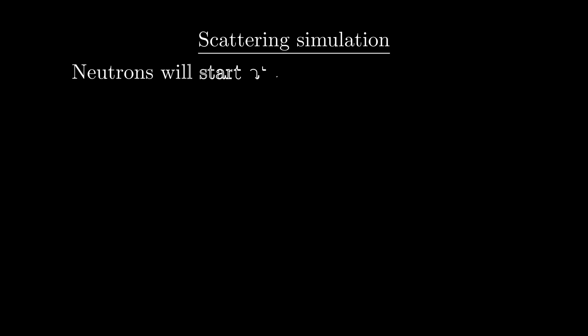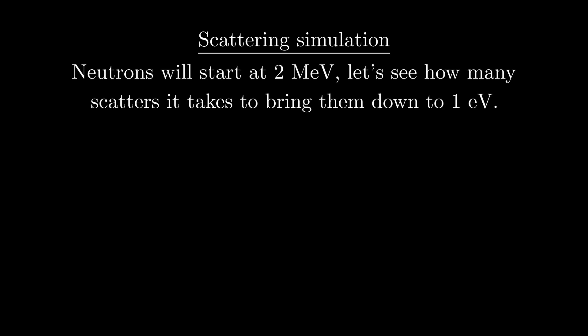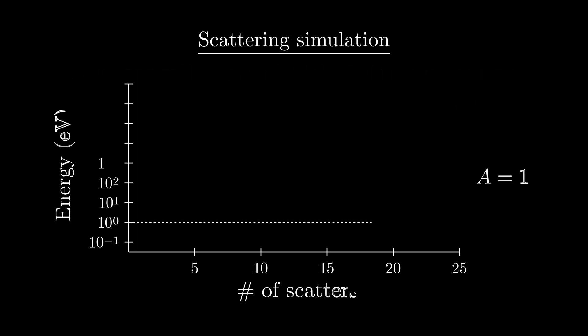We'll do a little Monte Carlo simulation here, where we simulate a number of neutrons which all start at 2 MeV, and we'll see how many scatters on average it will take for them to scatter down to 1 eV. Our first example will be for A equals 1. This is analogous to neutrons scattering off of protons or hydrogen 1. For each energy, we'll start with a neutron at 2 MeV, and then we'll randomly sample a new energy from the probability density function that we saw earlier. We'll then repeat this process and record the number of scatters it takes to get our energy below 1 eV.